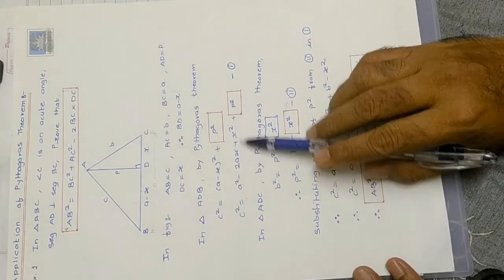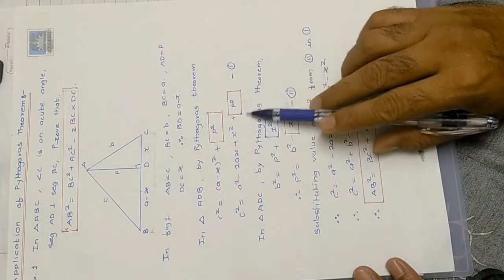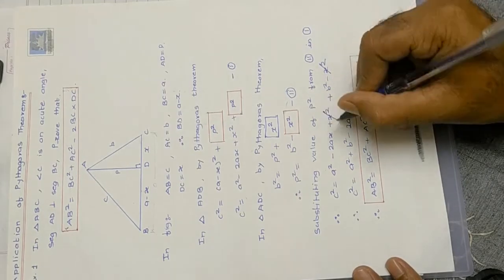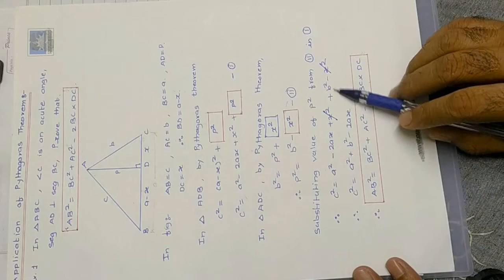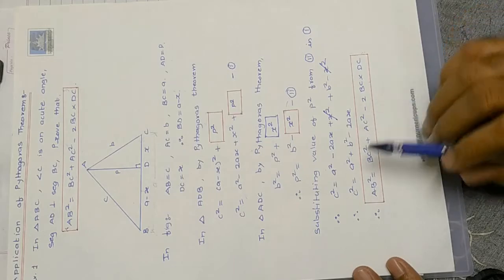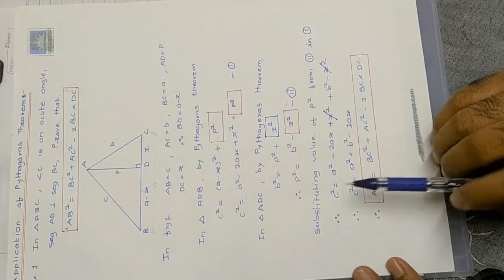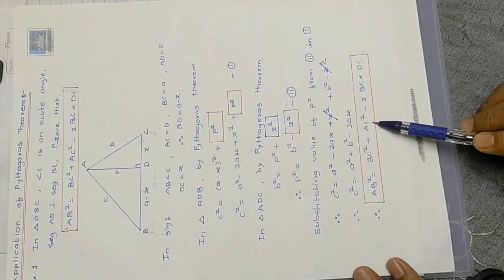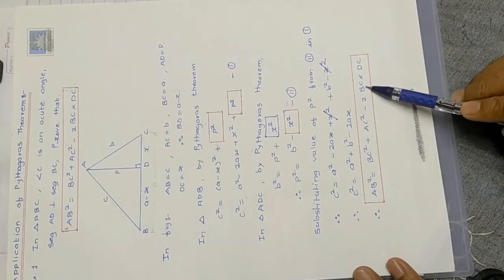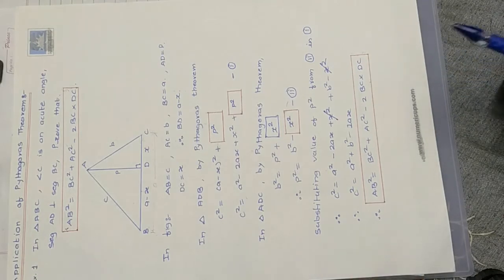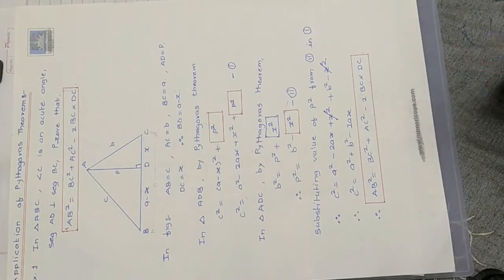Substituting p² = b² − x² into equation one: c² = a² − 2ax + x² + b² − x². The +x² and −x² cancel, giving c² = a² + b² − 2ax. Since c = AB, a = BC, and x = DC, this becomes: AB² = BC² + AC² − 2·BC·DC. Hence proved.